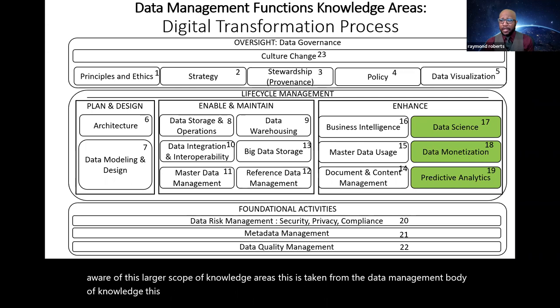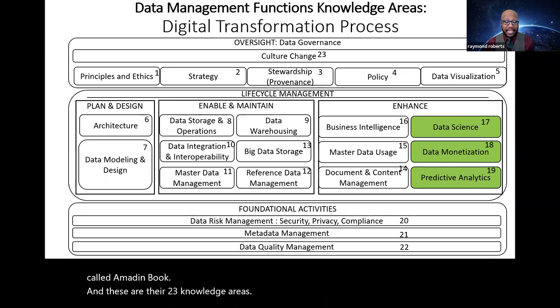It's not that you can't do any data science or analytics or technology solutioning, only focusing on the solution. But you're going to find a low level of efficiency between the amount of resourcing you put in and the results that you get out if your team is not actively aware of this larger scope of knowledge areas. This is taken from the data management body of knowledge. This is an international institution. You can find it online. They have a book called the DAMA DMBOK. And these are their 23 knowledge areas.